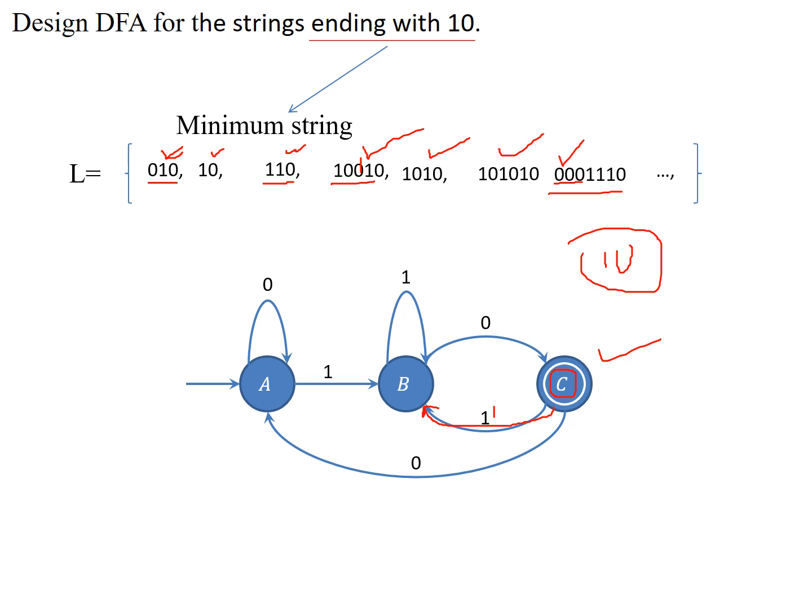To ensure this diagram is a valid DFA, every state must have a transition on every input symbol. In our case inputs are zero and one. State A has transitions on zero and one, state B has transitions on zero and one, and state C also has transitions on zero and one. So this becomes a complete DFA. I hope you understand — please comment any doubts, subscribe, and keep supporting. I will do more DFA problems. Thank you.